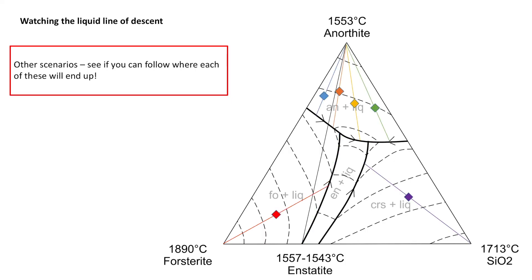What about these other scenarios? Here we have blue, orange, yellow, green, purple, and red systems, each with their lines drawn for ease at the start to show you where they intersect. Perhaps you can pause this video and think about where these systems are going to end up as they crystallise.